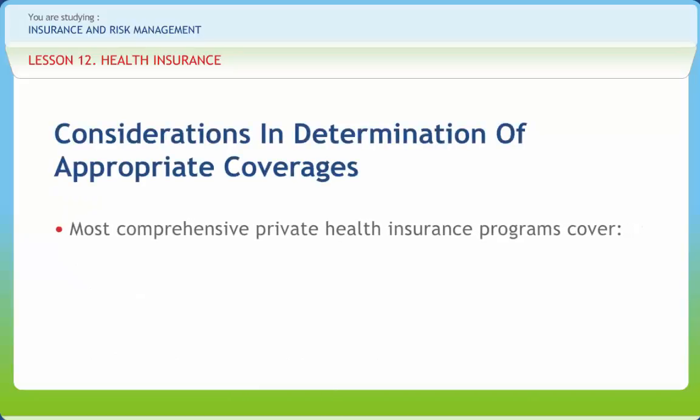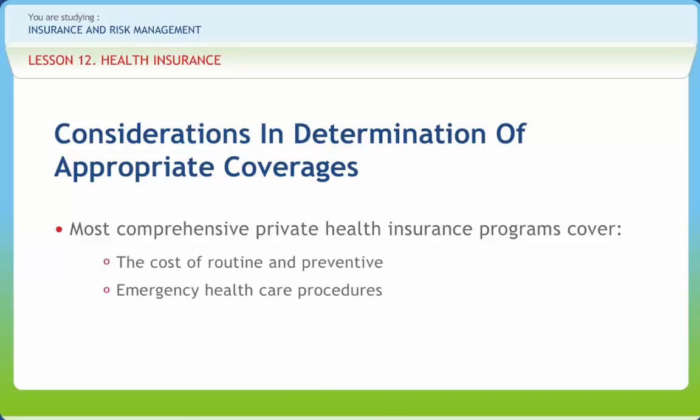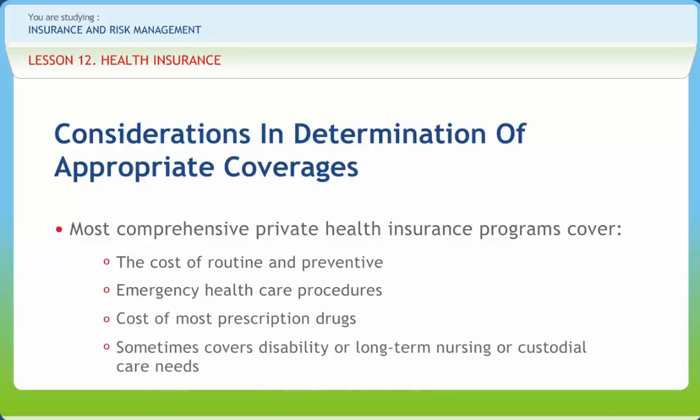Most comprehensive private health insurance programs cover the cost of routine, preventive, and emergency health care procedures, the cost of most prescription drugs, and sometimes cover disability or long-term nursing or custodial care needs. Health insurance may be provided through a government-sponsored social insurance program or by private insurance companies, and may be purchased on a group basis — for example by a firm to cover its employees — or purchased by individual customers.